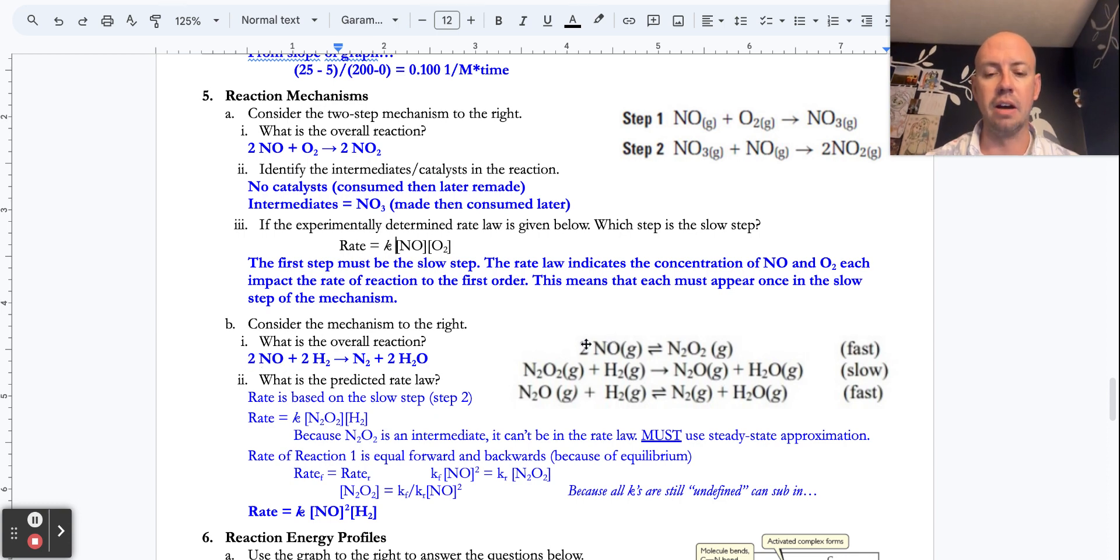So NO is here on the left. There's hydrogens on the left. But the N2O2 cancels with this N2O2. The N2O cancels with this N2O. So those go away, leaving us with N2 and H2O's. So we would want to make sure that that reaction makes sense and is also balanced, which it is.